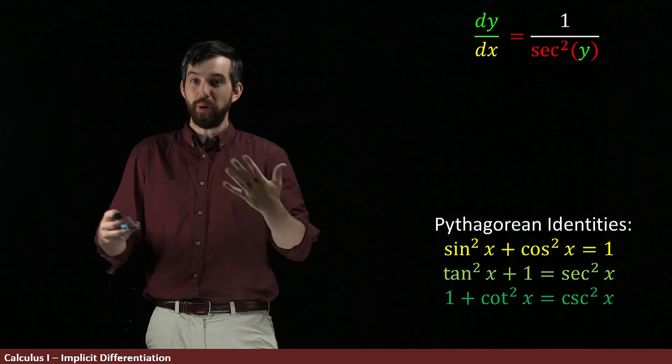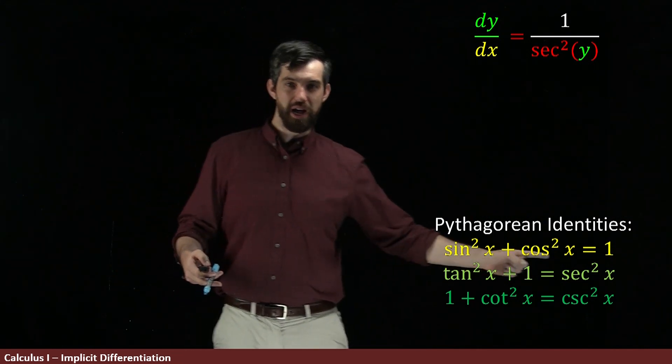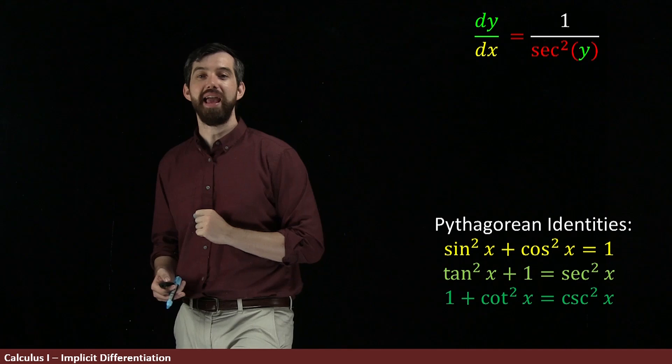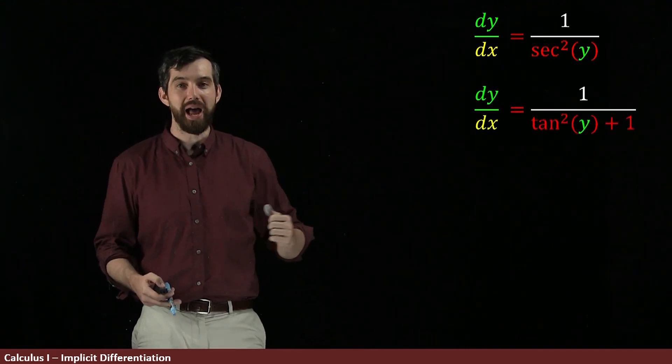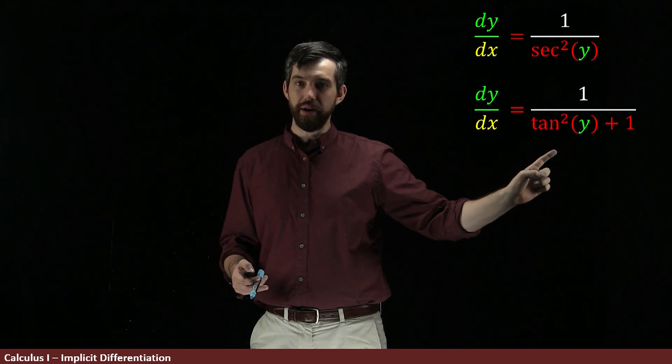Nonetheless, for the purposes of what we're doing here, 1 over secant squared, there's a secant squared, it looks like it's tan squared plus 1. So I'm going to replace 1 over secant squared by 1 over tan squared plus 1.